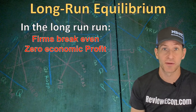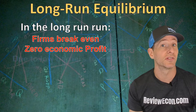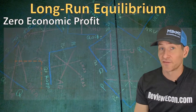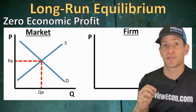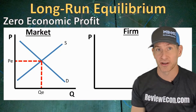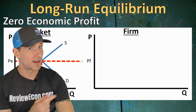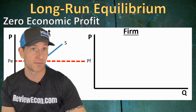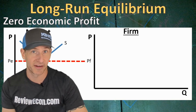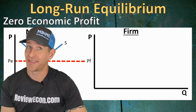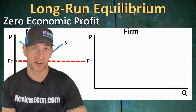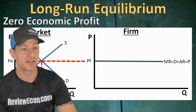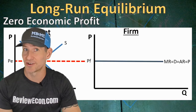The reason why perfectly competitive firms break even in the long run is due to low barriers to entry. So let's remind ourselves how to draw zero economic profit. First of all, we have our supply and demand graph with our equilibrium price and equilibrium quantity marked. That equilibrium price moves over to the firm graph, and the price for the firm is equal to the price in the market because perfectly competitive firms are price takers and have no influence on the price they can charge. The price is determined by the market, and that price becomes their marginal revenue, demand, average revenue, and price — or MR DARP.